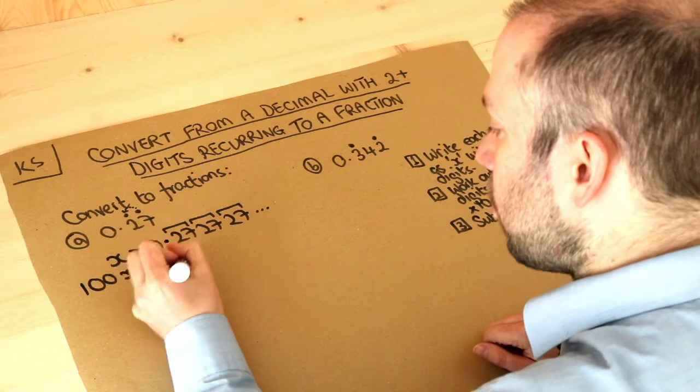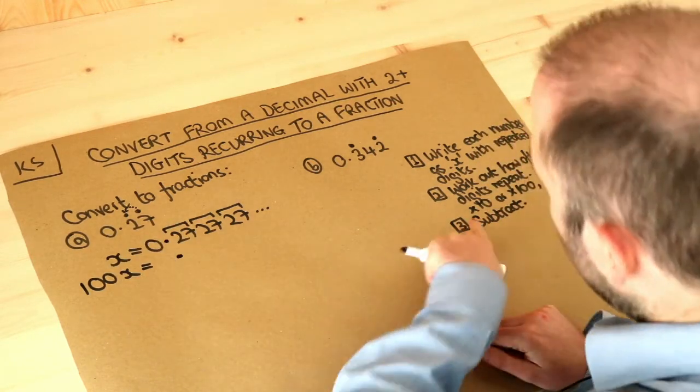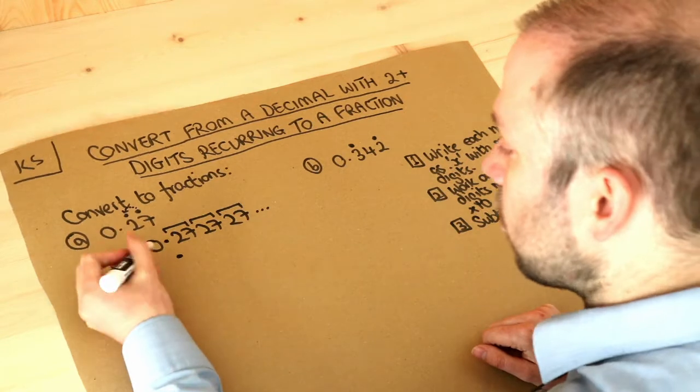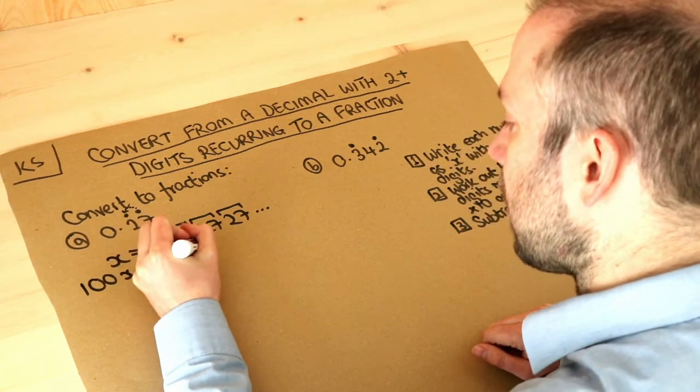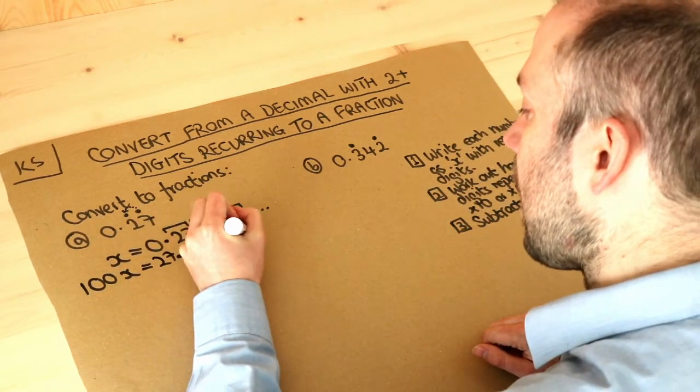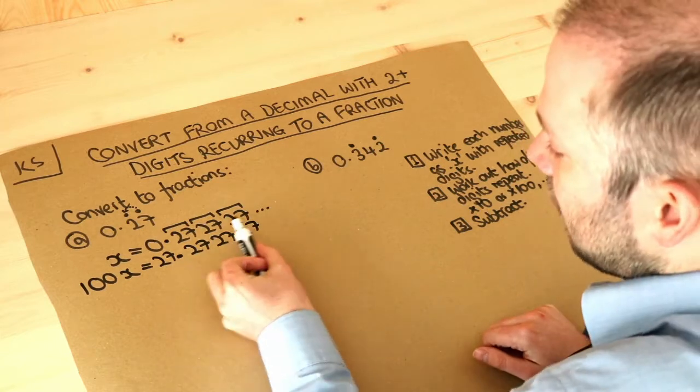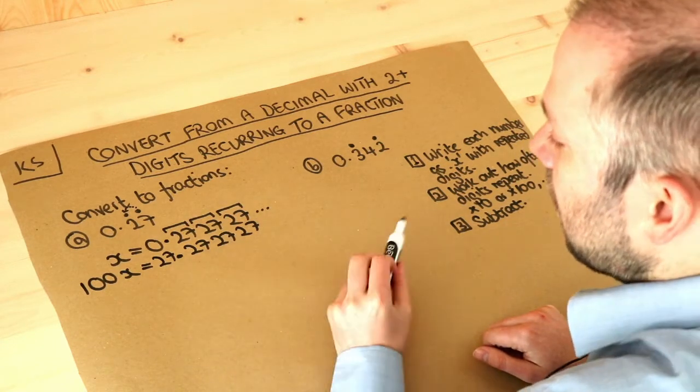Now my advice is to line up these decimal points because otherwise it's going to make the next step more difficult. So we've got 27.272727, and it should be that these repeating digits here should line up, so these are both two, these are both seven, etc.